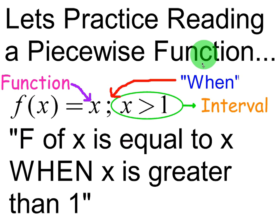Let's practice reading a piecewise function. So you need to know how to read it in order to solve it. f of x means function, and this is your function itself, f of x equals x. The semicolon means when or whenever. So f of x is going to be equal to x whenever x is bigger than 1. And this part on the right, to the right of the semicolon, is called your interval.